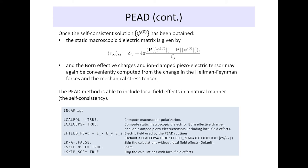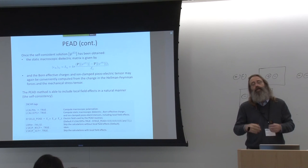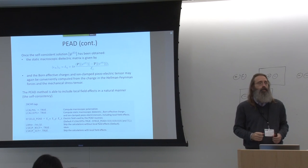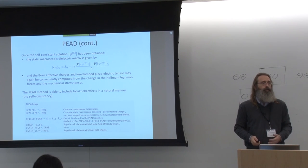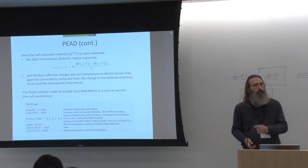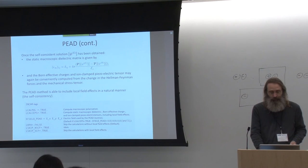This is very nice, and we can do this for any Hamiltonian. Density functional perturbation theory works for density functionals but not for hybrid functionals, but this finite-field method works for hybrid functionals as well.